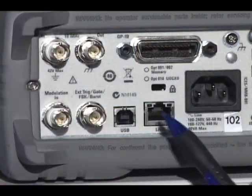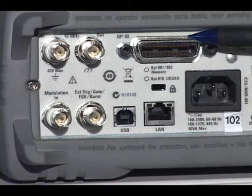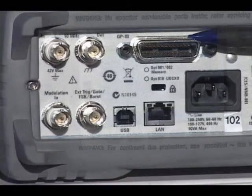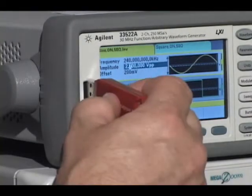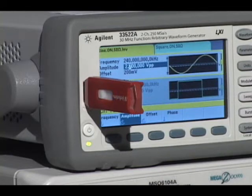Built-in LAN and USB and optional GPIB make it easy to connect to the 33500 series. The USB port on the front can be used for uploading and downloading instrument setups and arbitrary waveforms as comma-separated variable files.